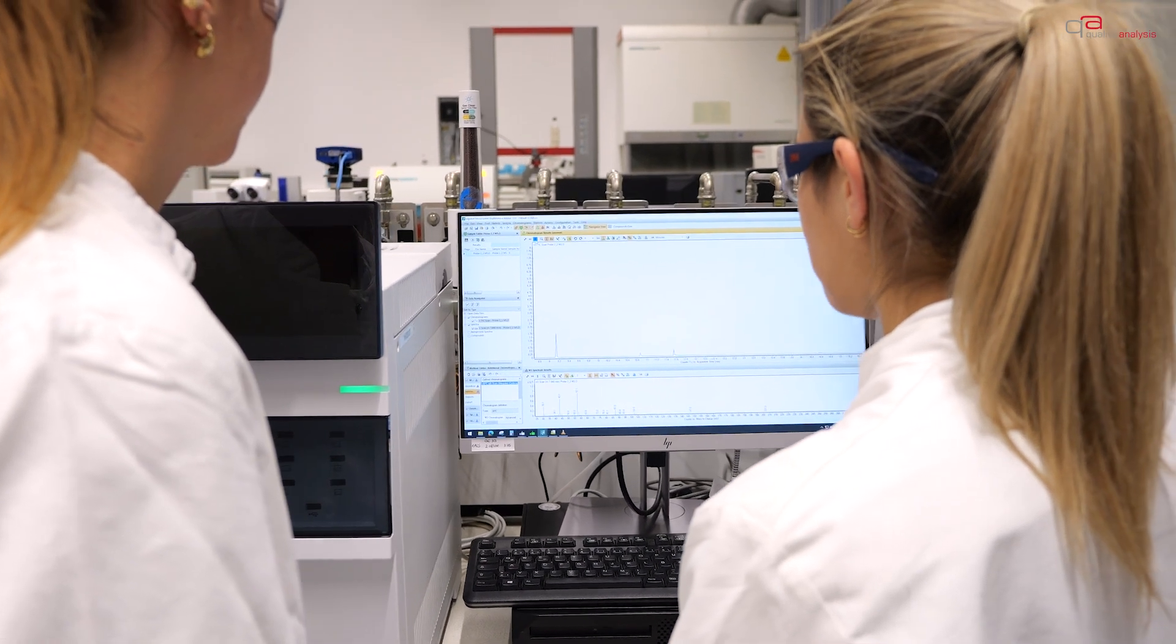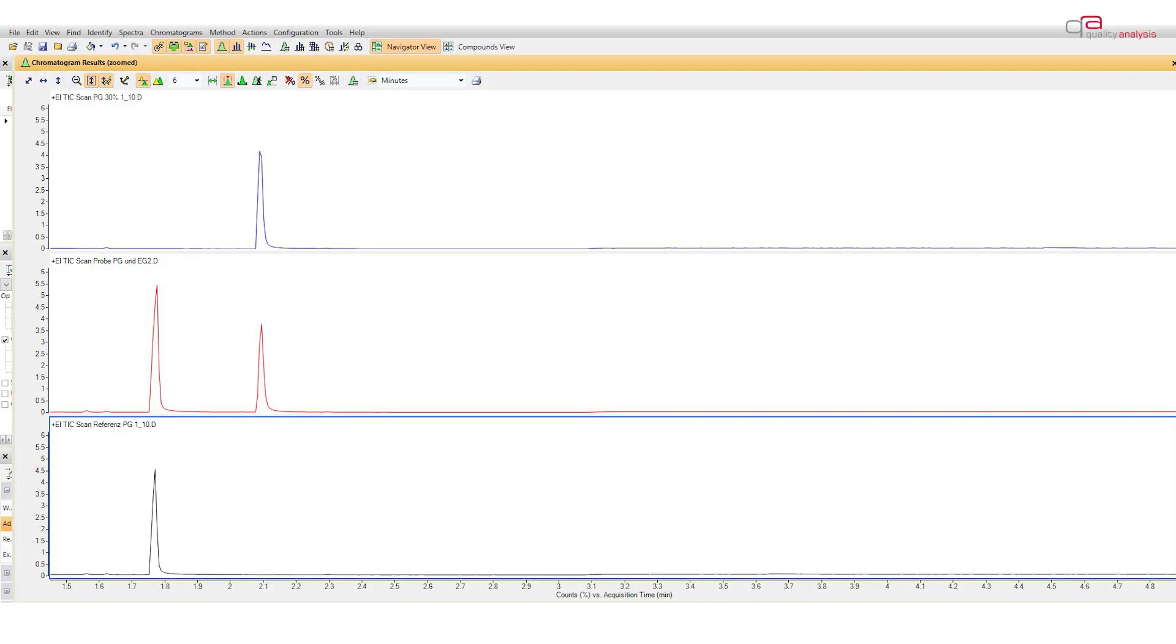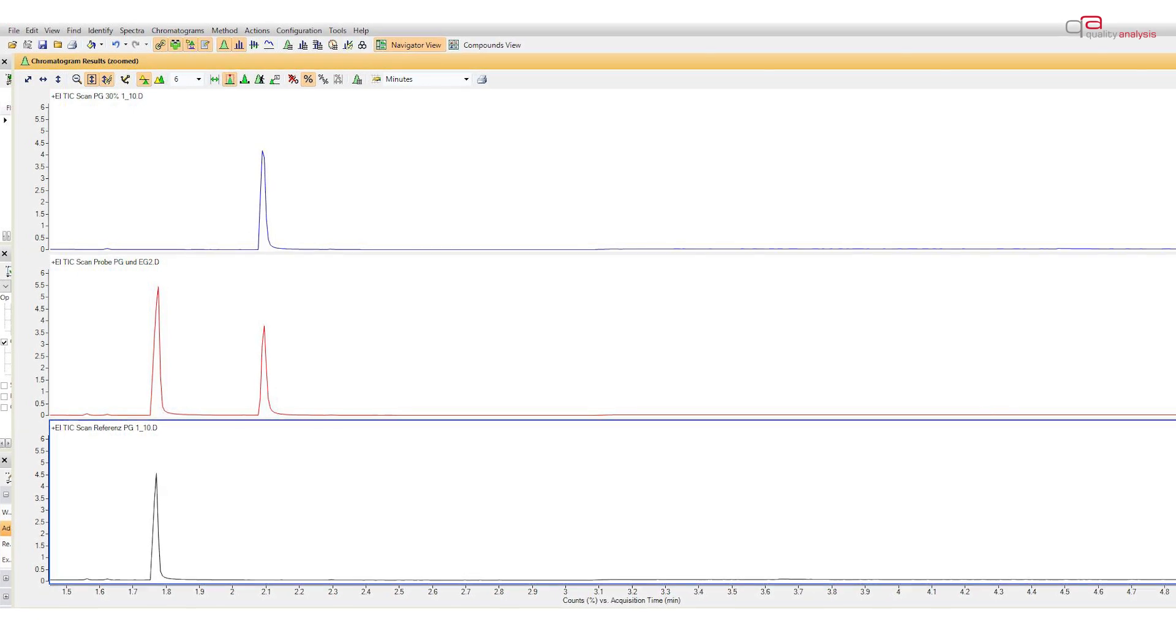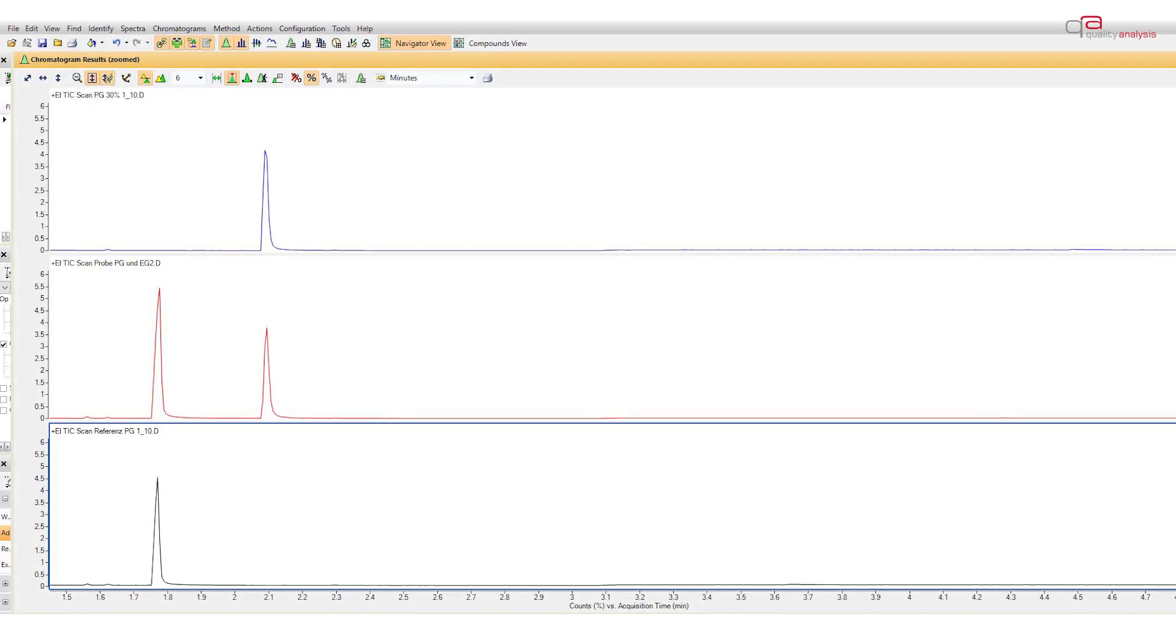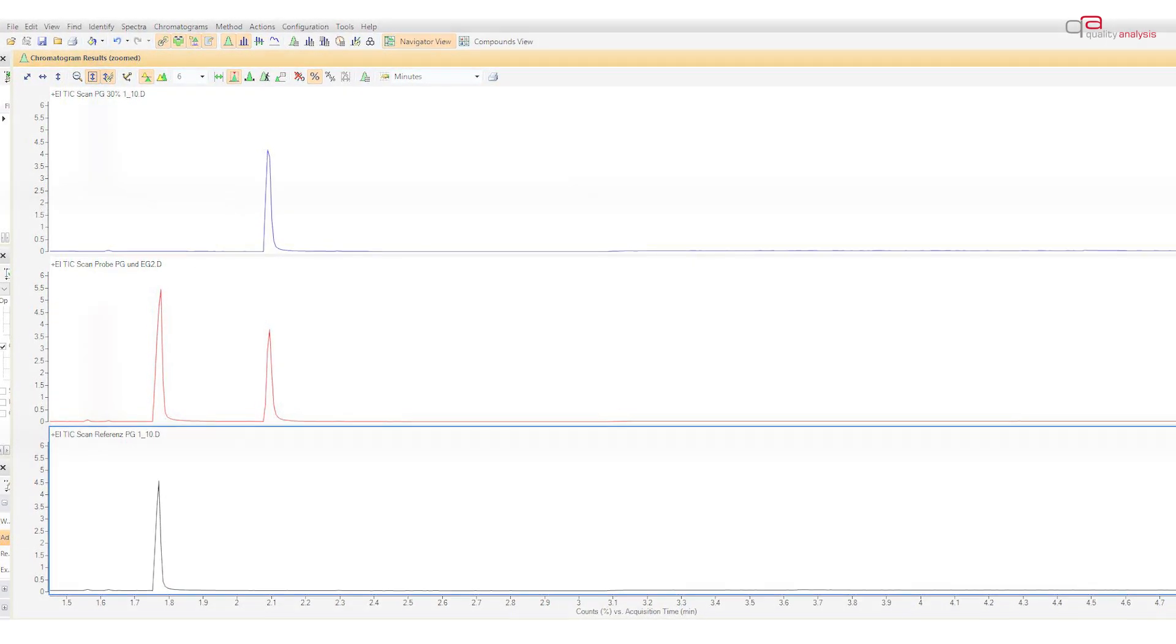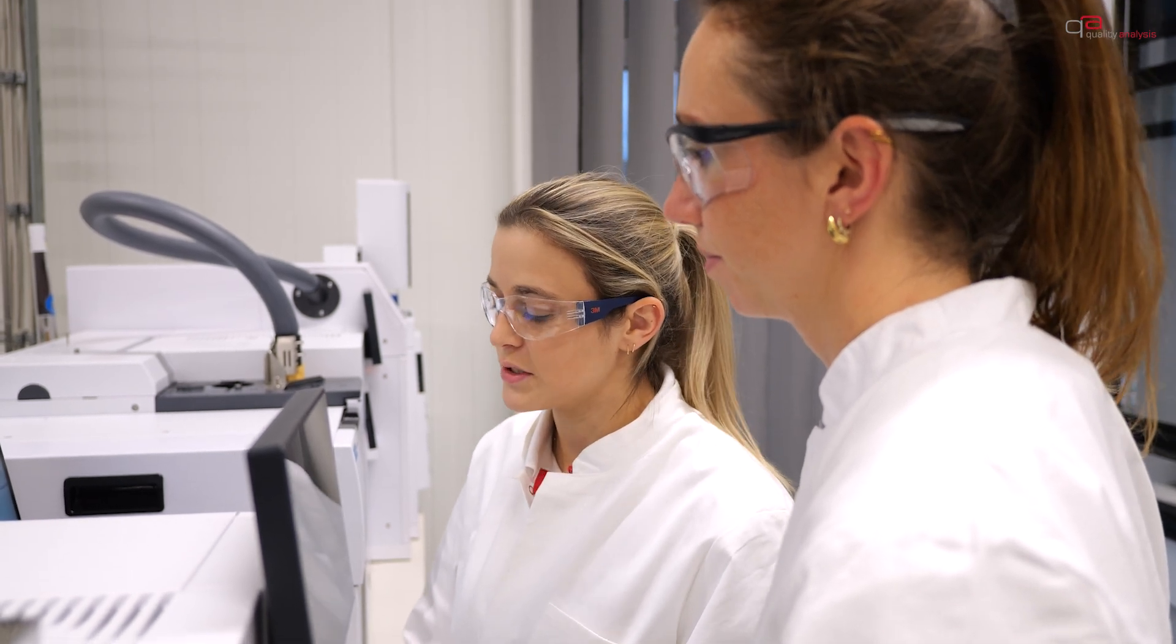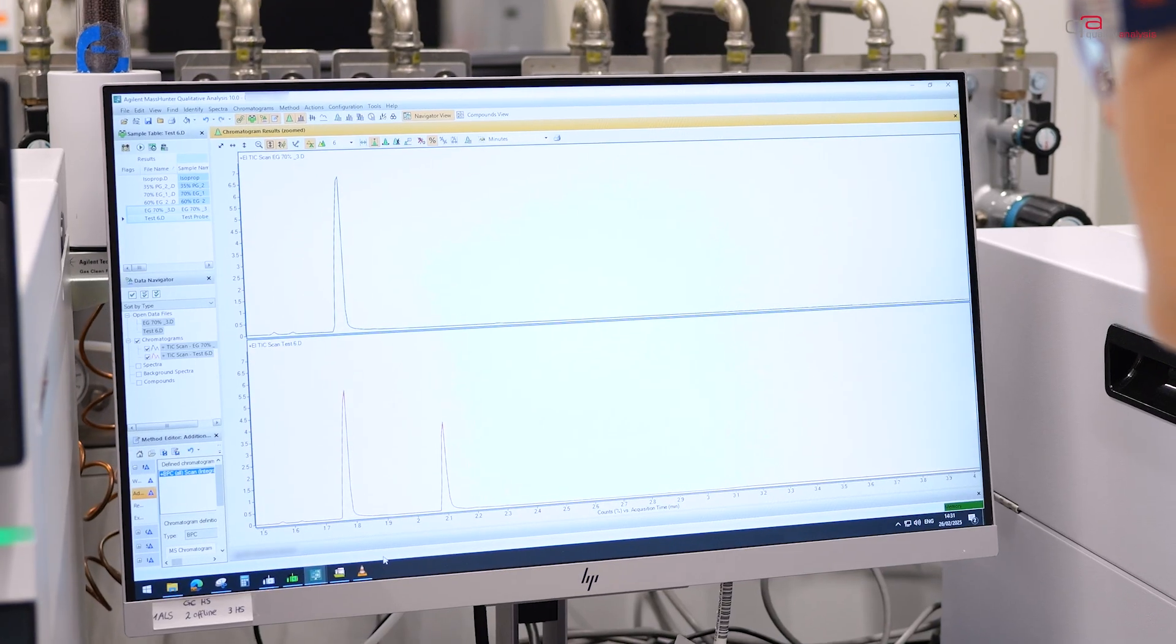The measurement results are shown in a chromatogram. Identification is undertaken by comparing the retention times with known reference substances. This step is necessary because the FID cannot directly determine the molecular structure.